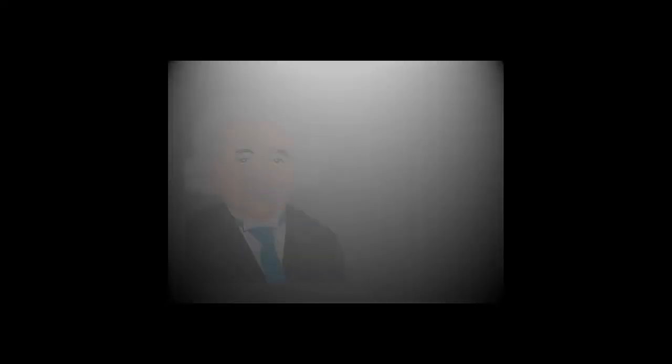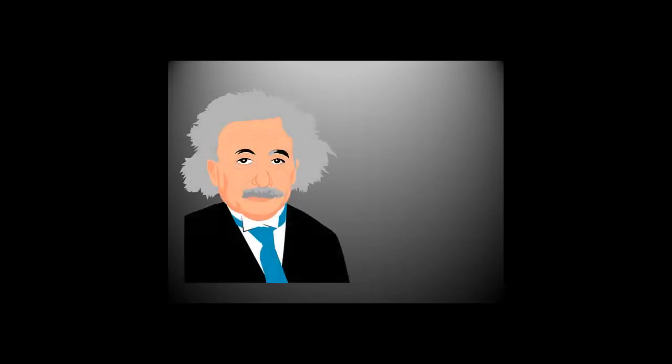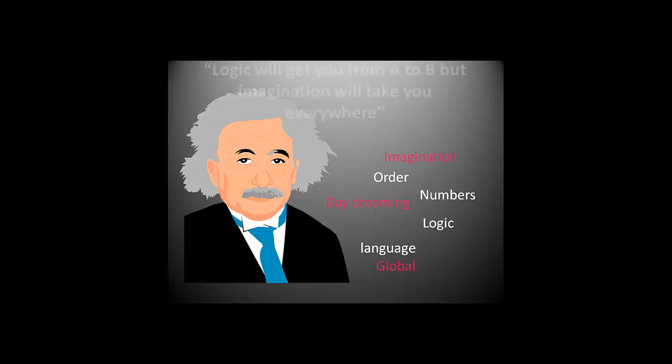If we take one of the great minds from the past, Albert Einstein, he was a physicist and a mathematician, which requires a lot of left brain qualities—order, numbers, logic, and language—at the same time. But he was also incredibly imaginative and had used daydreaming to help him explore a challenge or a problem. He used both sides of the brain.